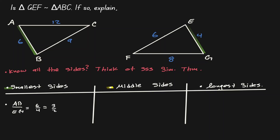Now let's compare the middle side for both of them. The middle side on the left is BC with 9, and the middle on the right triangle is FE with 6. Setting up our proportion, that would be BC divided by FE, which is 9 over 6, which is 3 halves as well.